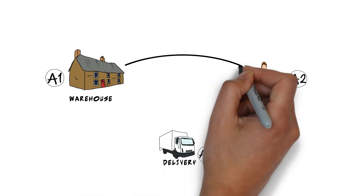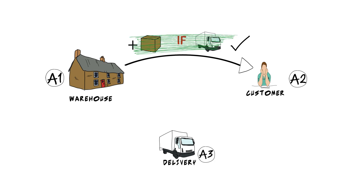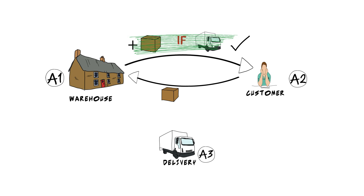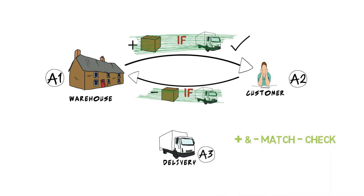First, the warehouse promises the customer the package — a plus promise — but only if the intermediary accepts it for delivery. The customer, or receiver, promises to accept those terms by making the complementary minus promise, thus confirming the possibility of a successful transfer, no matter who delivers.